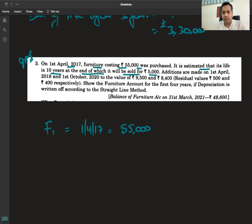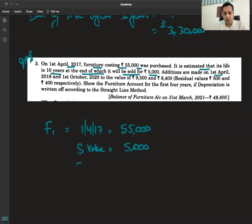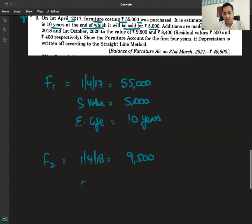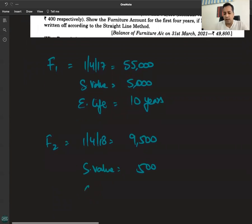On 1st April 2017, furniture costing 55,000 was purchased. Additions are made on 1st April. Scrap value 5,000. Estimated life 10 years. Additions are made on 1st April 2018, F2, 9,500. Scrap value 500, and the same thing, so its estimated life is also 10 years.